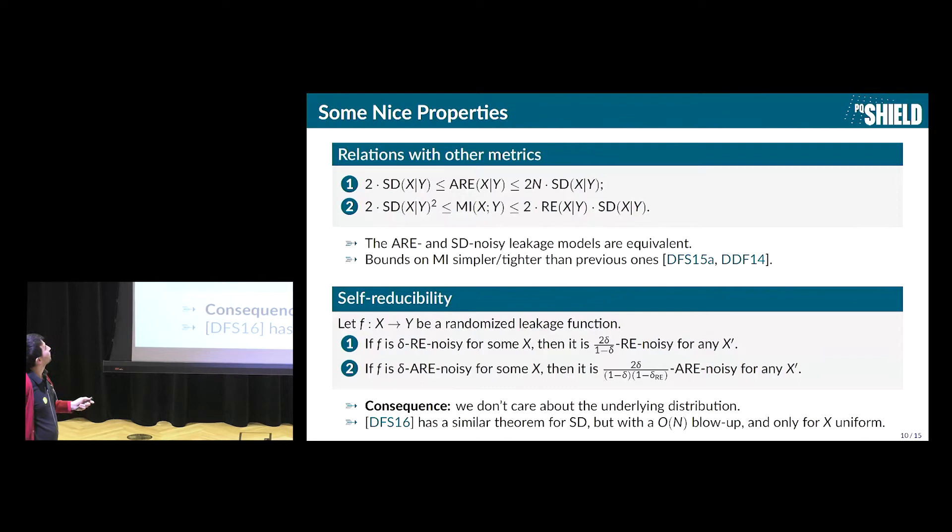So first I will briefly say a few properties. I will only talk about the self-reducibility property, which is quite interesting for our purposes. It shows essentially that if a certain function f is delta ARE noisy for some distribution X, then for any other distribution over the same support, it will be 2 delta over 1 minus delta ARE noisy. So it shows that if it's delta ARE noisy for X, it is big O of delta noisy for any X prime. And this is nice because it allows to abstract away the underlying distribution. And it makes things quite simpler because you don't have to always keep track of what your underlying distribution is.